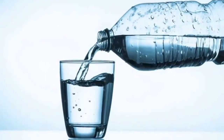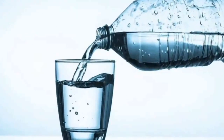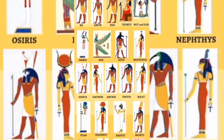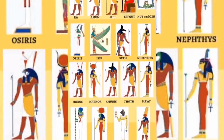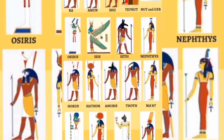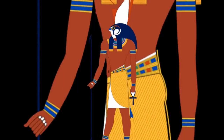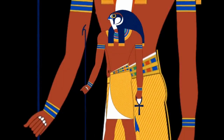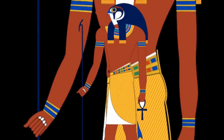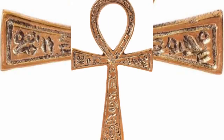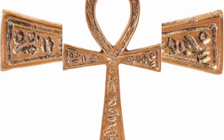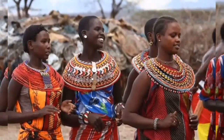It was especially commonly held in the hands of ancient Egyptian deities, or being given by them to the pharaoh, to represent their power to sustain life and to revive human souls in the afterlife. The ankh was one of the most common decorative motifs in ancient Egypt and was also used decoratively by neighboring cultures.